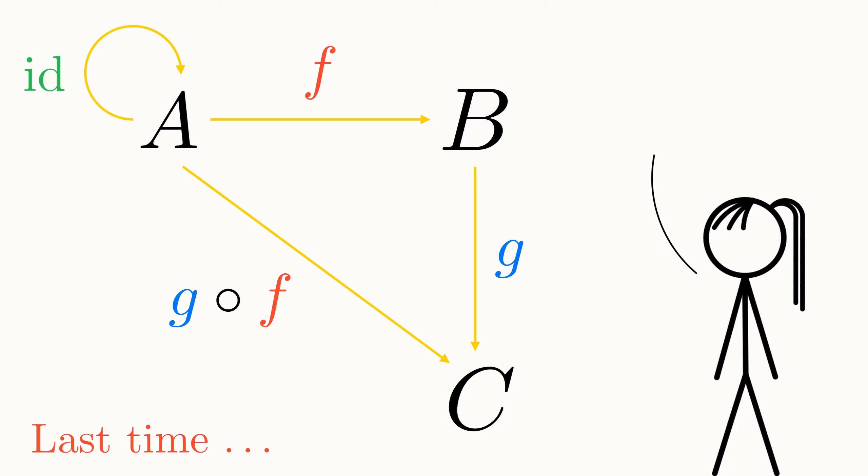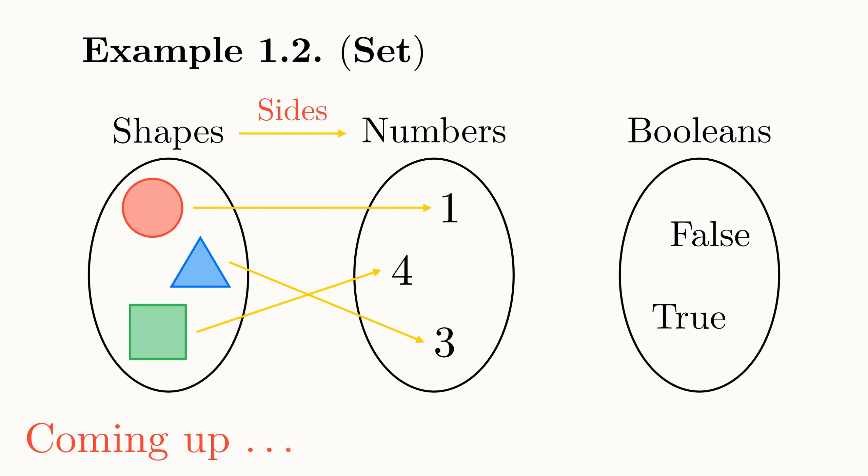The preliminary lecture in this series has put us in this situation with categories. We've seen the motivation behind them, described an intuitive definition of one, and even used this definition to construct a mathematical proof. However, to unlock the maximum potential of category theory, we need to rigorously build the definition of a category from the ground up.